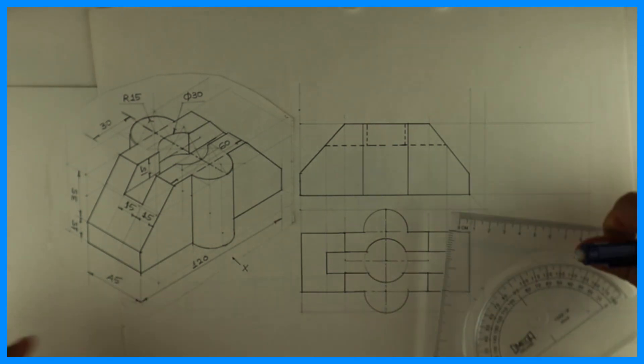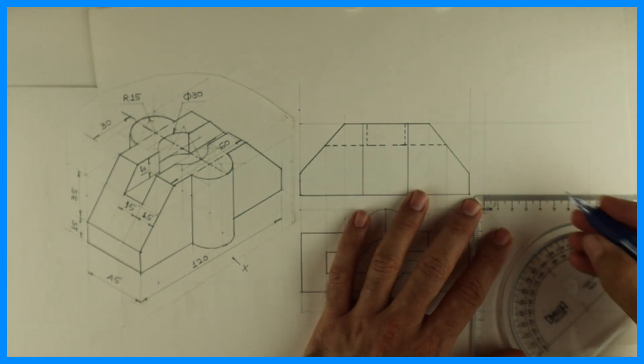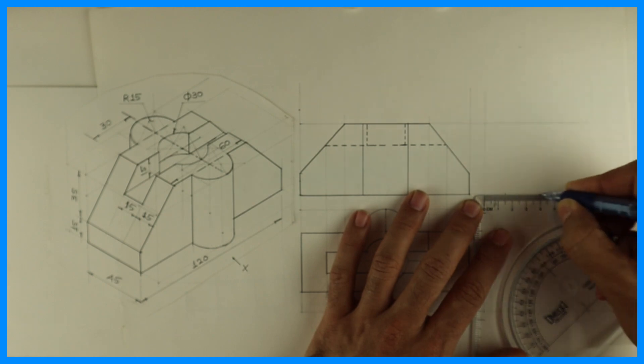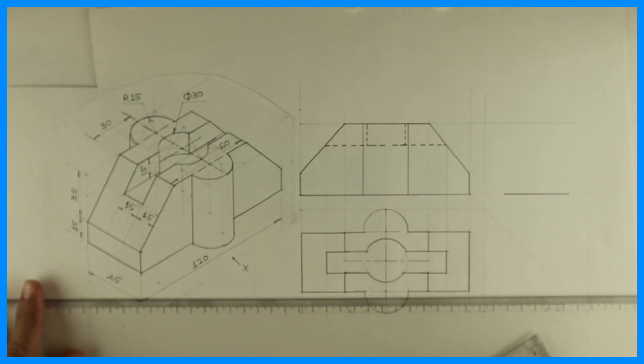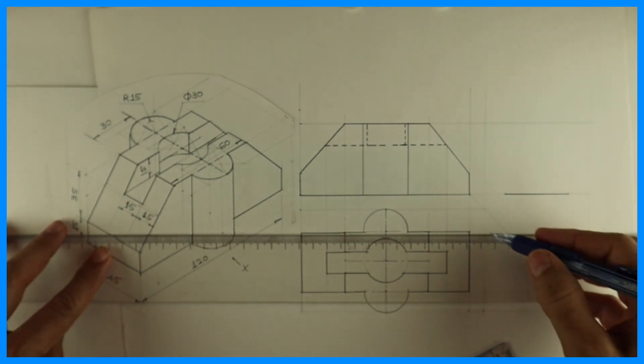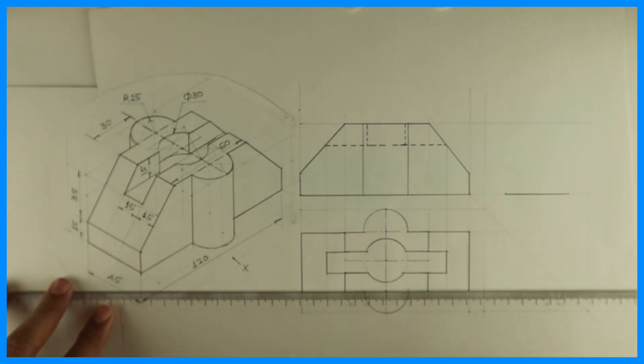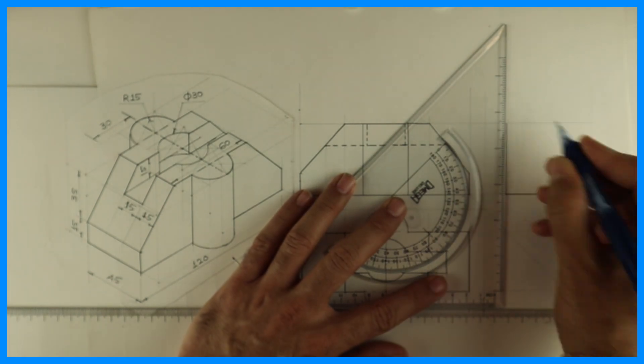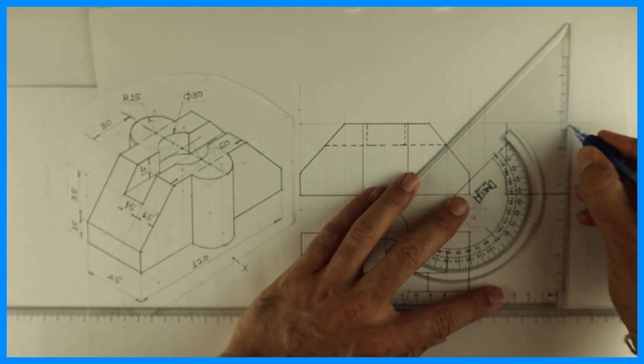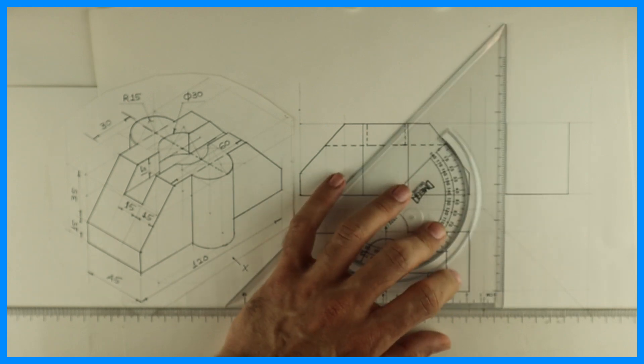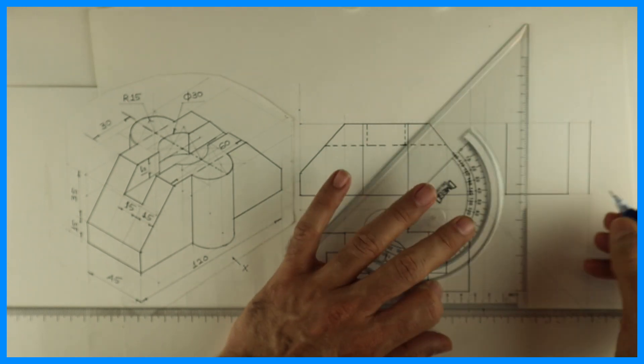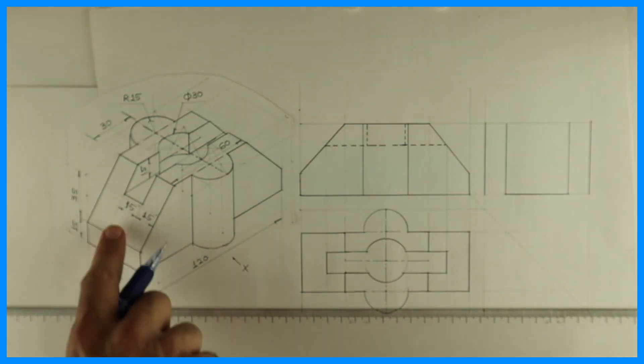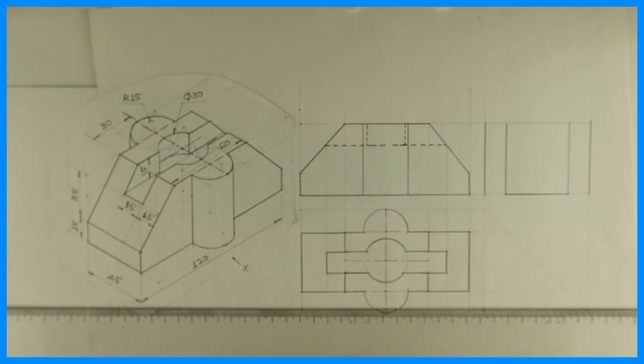Now for side view, this total is 75, so take 15-15 on both the sides. You extend from here. Extend this also. So you'll get this.